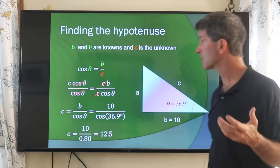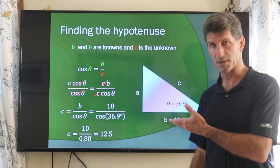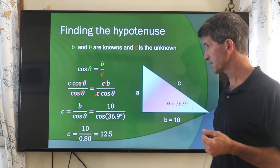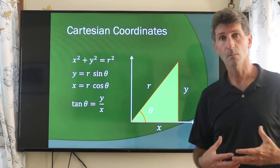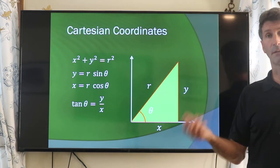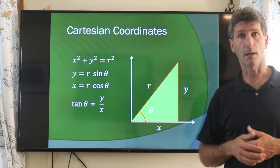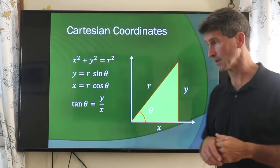So sine, cosine, sort of the same thing. Finding c here. And tangent. Sine, cosine, tangent, and the Pythagorean theorem are really helpful for finding the properties of a right triangle.